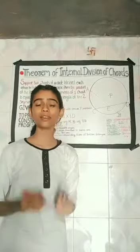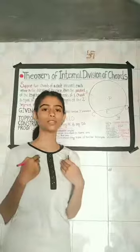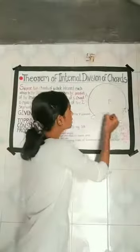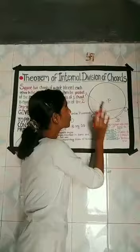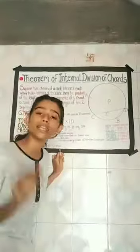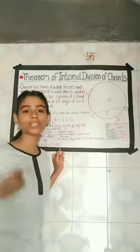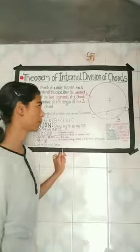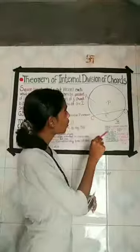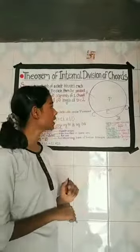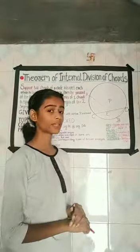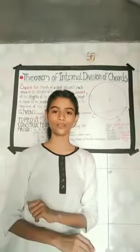In simple language, I will tell you: when two chords intersect each other inside a circle, the products of their segments are equal.